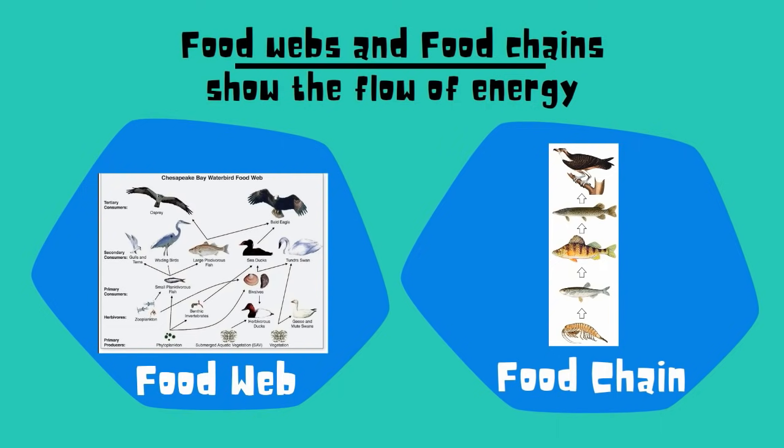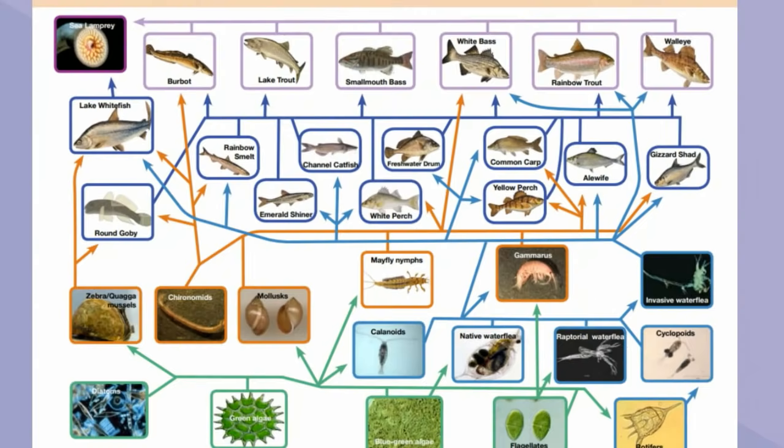For example, moving from the mollusk to the white perch would be a trophic level.